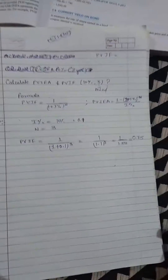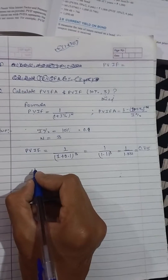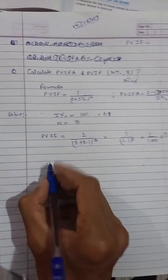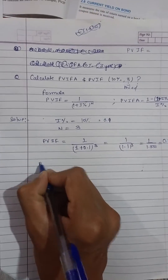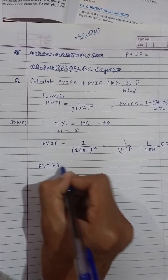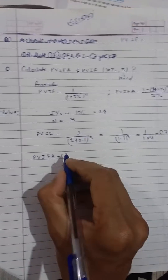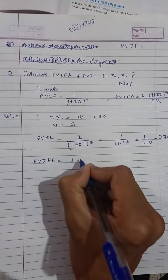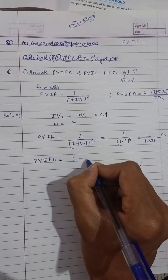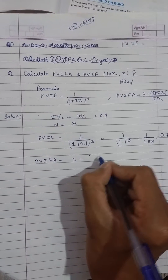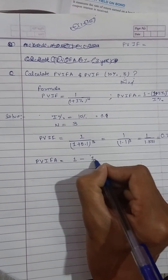So that is the PVIF value. Now next, let's clear and calculate the PVIFA value. Let's put the values into the formula.